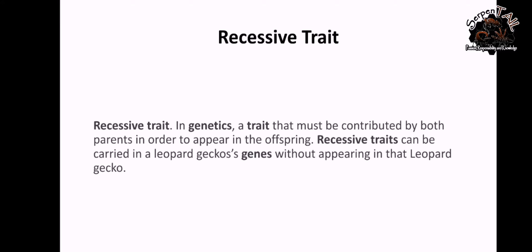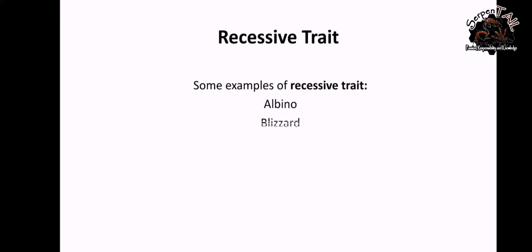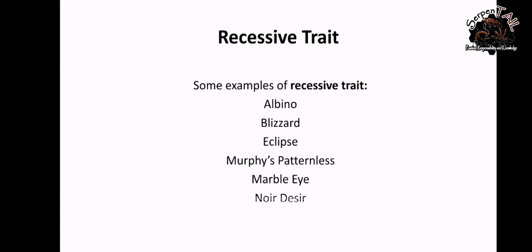So under recessive genes — recessive trait in genetics is a trait that must be contributed by both parents in order to appear in the offspring. Recessive traits can be carried in a leopard gecko's gene without appearing in that leopard gecko. So meaning, a recessive trait is a trait which is hidden by another trait, whether it is normal or also the same recessive trait. Some examples of recessive traits are albino, blizzard, eclipse, Murphy's patternless, marble eye, and Mack Snow.